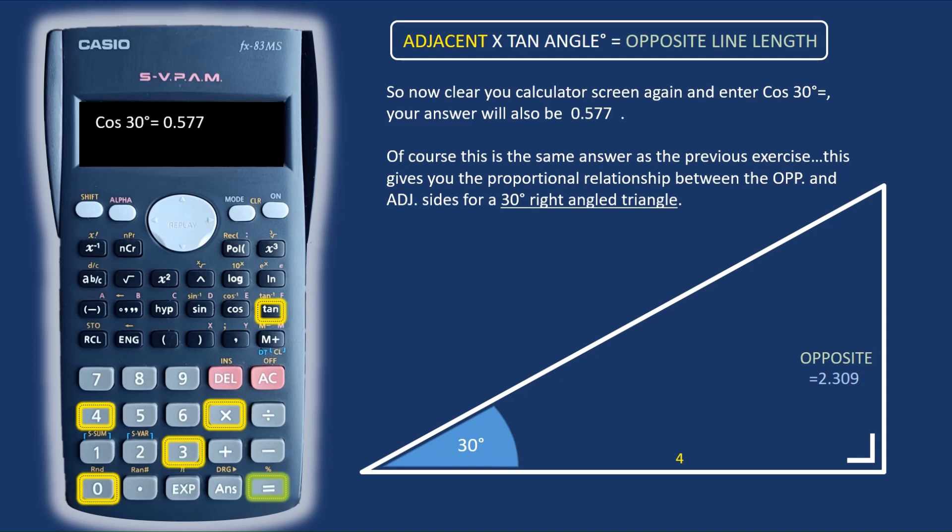And if you want to clear the screen of your calculator again and just type in cos 30 degrees as shown there, you'll get the same answer 0.577.